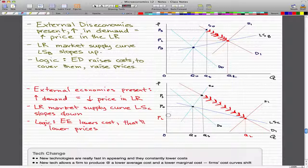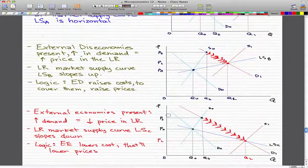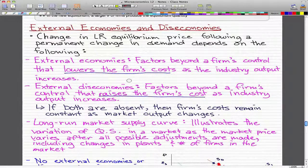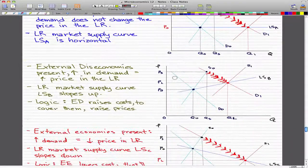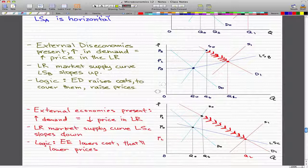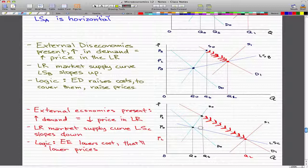So, that example with new firms entering the market because there's incentives is not really a good example. The main thing to remember about external economies is that there are factors beyond a firm's control, and these factors lower the firm's costs as the industry output increases. A better example is that perhaps when there was an increase in demand from D0 to D1, technology for production also improved, and that lowered the cost, which lowered the prices.